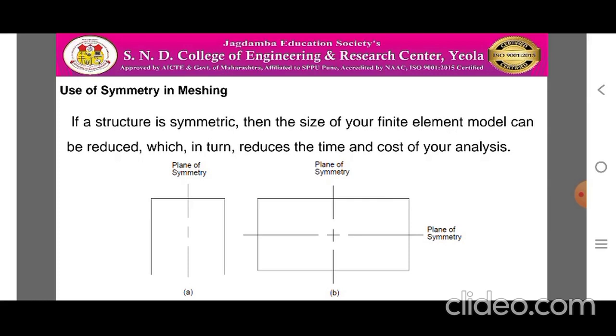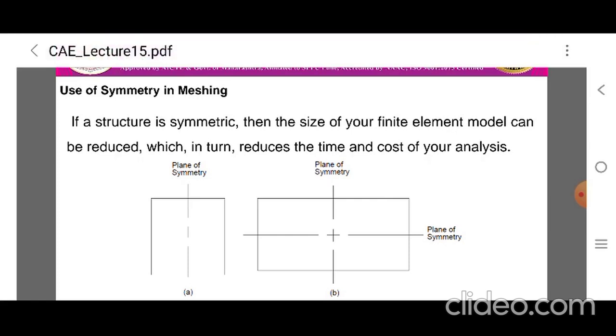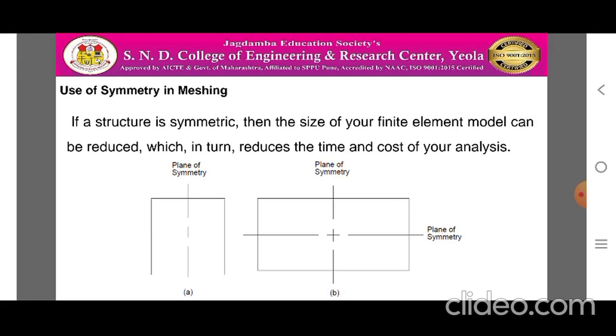For each plane of symmetry that you have in your model, a model size can be reduced by a factor of approximately 2. The figure A and B illustrates the structure that contain one and two planes of symmetry respectively.